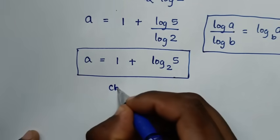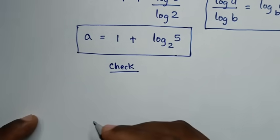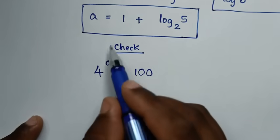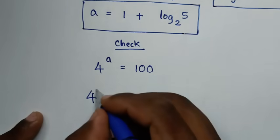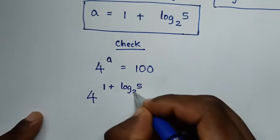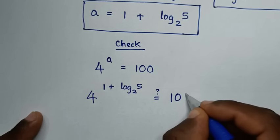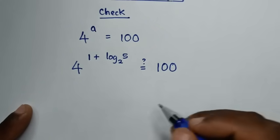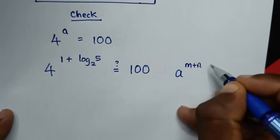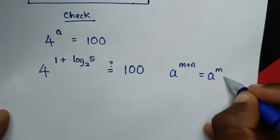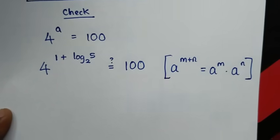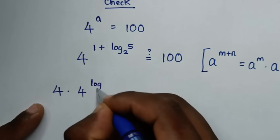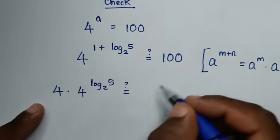Let's check this answer. From our problem, 4 power of a equals 100. We substitute the value of a, which is 1 plus log of 5 base 2. So it becomes 4 to the power of 1 plus log of 5 base 2. This is in the form a^(m+n) = a^m times a^n, so it becomes 4 power of 1, which is 4, times 4 power of log of 5 base 2.